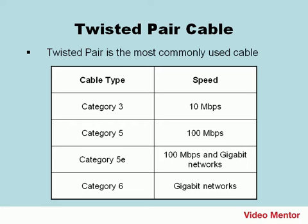Companies are always looking for more speed, so we also have Category 5E, or 5 Enhanced, which is suitable for 100 megabits per second and gigabit networks. And depending on how it's installed, you can get a much higher data throughput than Category 5. And finally, Category 6, which goes even faster and is suitable for gigabit networks.